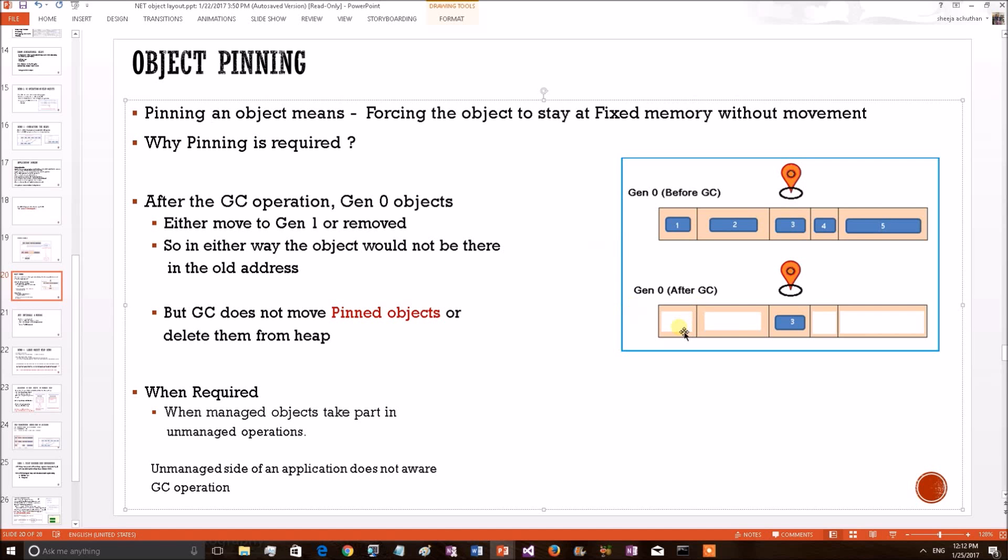GC will remove unreferred objects and move referred objects. But GC will not touch this third object. It will still stay at the Gen0 in their old address.